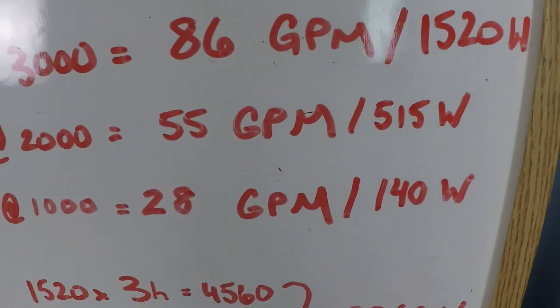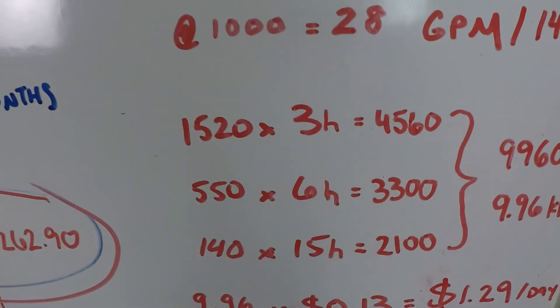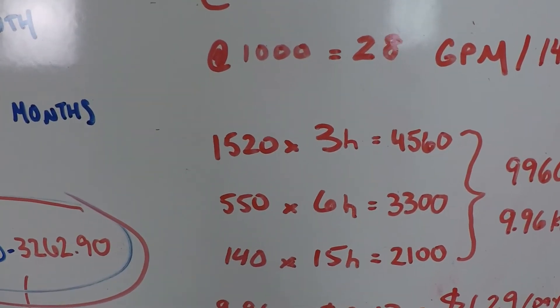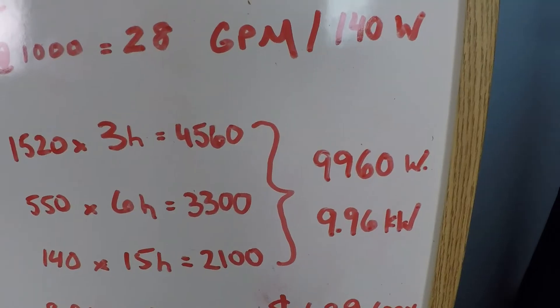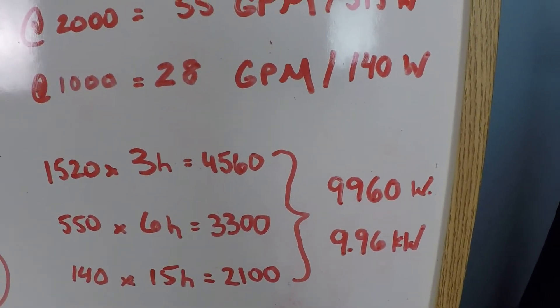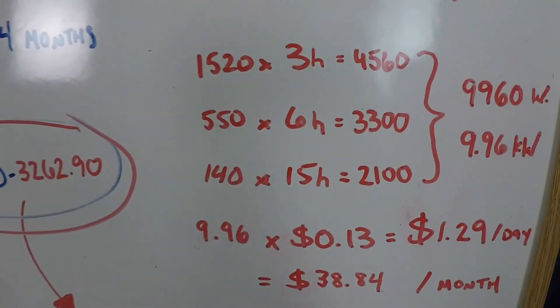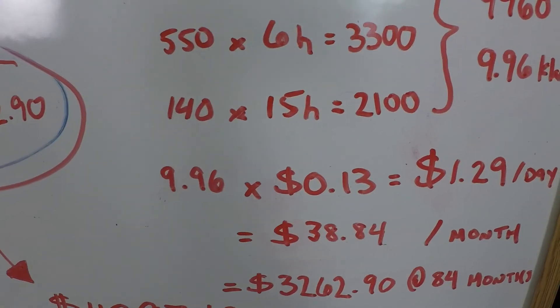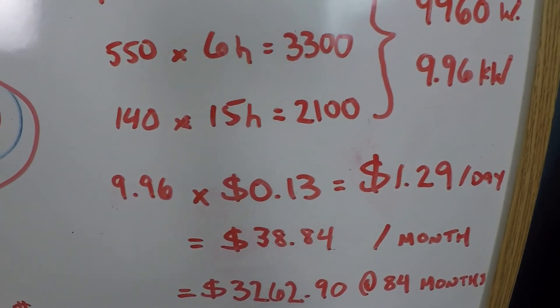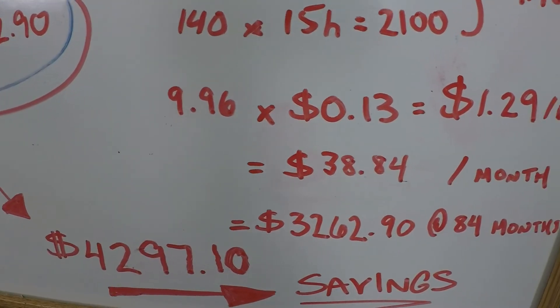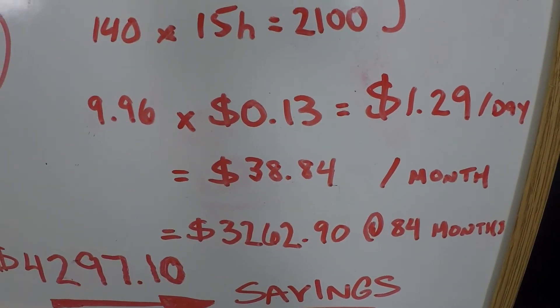So this is even a very conservative estimate at 140 watts, which is good. Because what you're going to see is that the variable speed pump costs substantially less to operate. So when we calculate out our total power consumption over a 24-hour day, we're looking at watts times hours, and we see that the total consumption for a 24-hour day is 9,960 watts, or 9.96 kilowatts. Since you pay for your power by the kilowatt hour, you would multiply 9.96 times the average of 13 cents per kilowatt hour, and that equals $1.29 per day. Extrapolated out, that's $38.84 per month. And on an 84-month service cycle, that total cost would be $3,262.90.